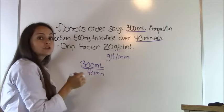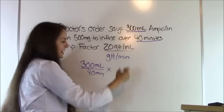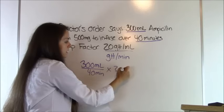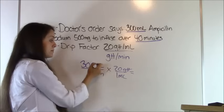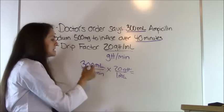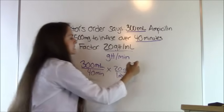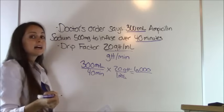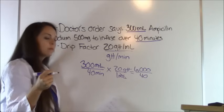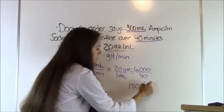All we have to do is get our milliliters to drops. Using our drip factor, one milliliter equals 20 drops, and milliliters cancels out. We have drops per minute — this one was an easy one. Multiply: 300 times 20 is 6,000, and 40 times 1 is 40. 6,000 divided by 40 gives us 150 drops per minute.